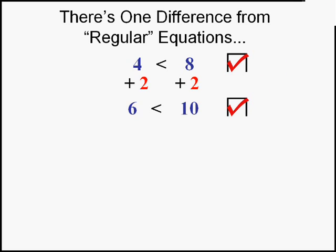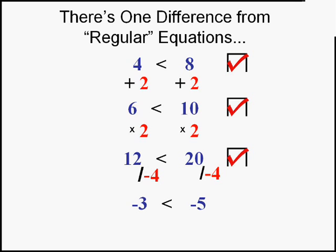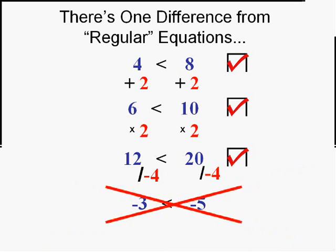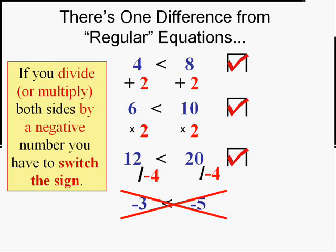Let's try doing something else to both sides. Maybe I'll multiply by 2. Seems fair. I get 12 and I get 20 and, son of a gun, 12 is still less than 20. Well, let's try another operation to both sides. Let's divide both sides by negative 4. And I get negative 3 is less than negative 5. Now wait a minute. Negative 3 isn't to the left of negative 5. It's to the right. Negative 3 is not less than negative 5.